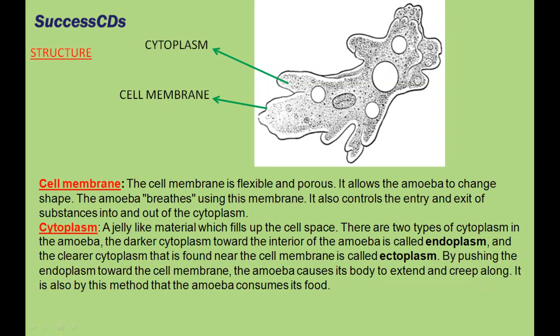The cytoplasm is a jelly-like material which fills up the cell space. There are two types of cytoplasm in the amoeba. The darker cytoplasm towards the interior of the amoeba is called endoplasm, and the clearest cytoplasm found near the cell membrane is called ectoplasm. By pushing the endoplasm towards the cell membrane, the amoeba causes its body to extend and creep along. It also consumes food by this method.